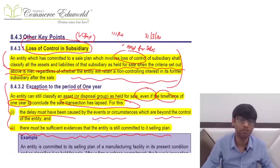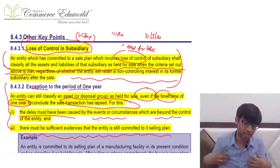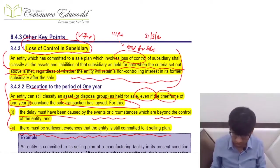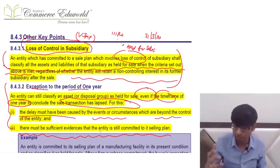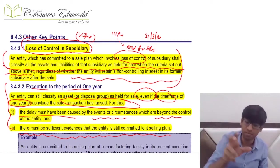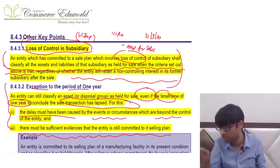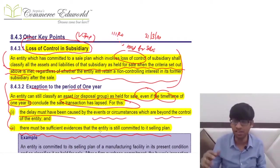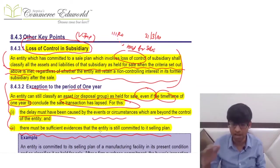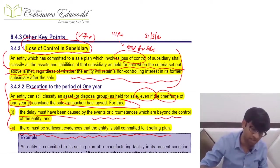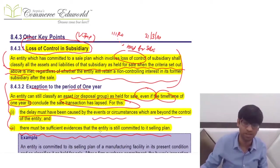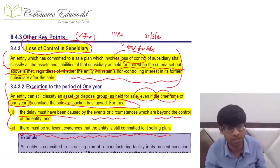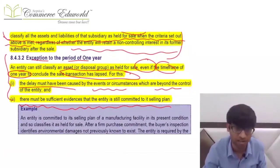In case of loss of control in a subsidiary, if management commits to selling a subsidiary involving loss of control, then all assets and liabilities of that subsidiary in the consolidated financial statement will be shown as held for sale assets and liabilities. Even if some non-controlling interest is retained in the future, that does not matter.